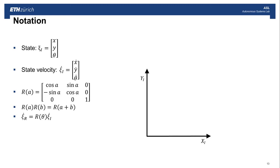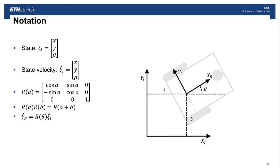To introduce notation: the state of the robot, the pose in the inertial frame, is given by x, y, and theta stacked as xi with respect to the inertial frame. The derivative xi dot is just x dot, y dot, and theta dot. We also define the fundamental rotation matrix around the z-axis using the standard rotation equation. For combining rotation matrices around the same axis, rA and rB gives r of A plus B. The state velocity in the robot frame, xi dot r, is just xi dot i times R(theta).